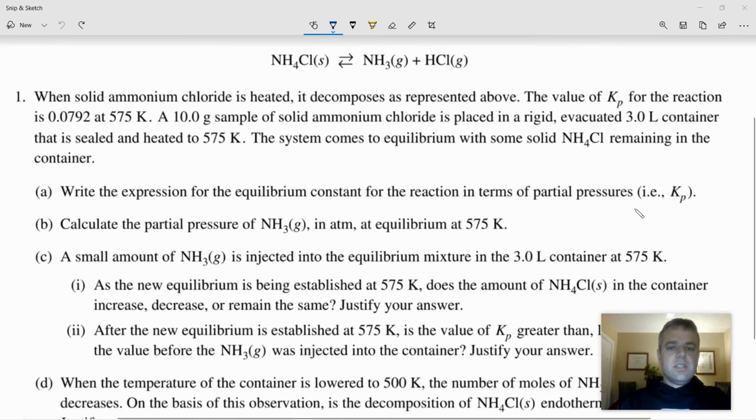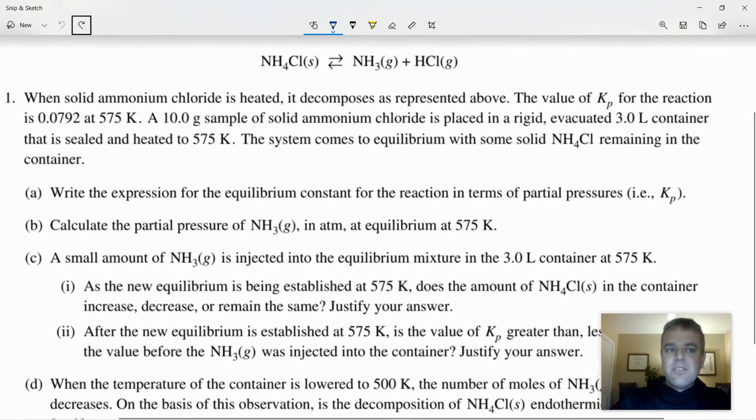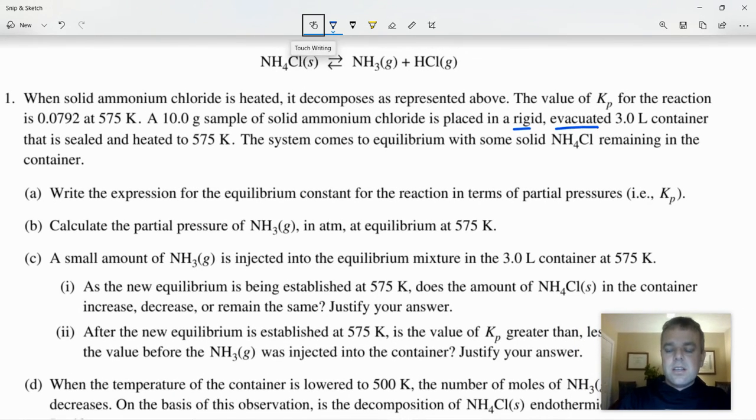All right, so now we're going to look at another problem, which says when solid ammonium chloride is heated, it decomposes according to this reaction. The value of KP for the reaction is 0.0792 at 575 kelvins. 10 grams of solid ammonium chloride is placed in a rigid evacuated 3-liter container that's sealed and heated to 575 kelvins.